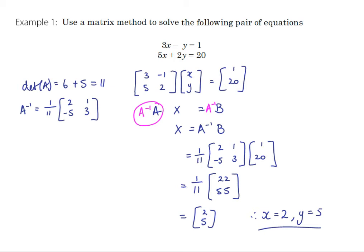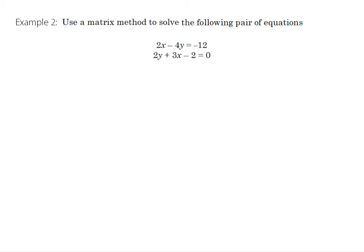One more example: use a matrix method to solve this pair of equations. The first thing you need to do is check that everything's all lined up and in the same order. The first equation is okay so we've got 2x minus 4y equals 12. The second equation we need to do some rearranging so we've got 3x plus 2y equals 2.